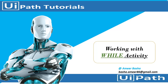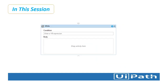Hello everyone, in this session we are going to learn about the While activity. The While activity is used for iteration purposes — unlike If and Switch which are not iterative, the While activity enables you to execute a specific process repeatedly while a specific condition is met or satisfied. The While activity continues iteration; if the specified condition is no longer met, the project exits the loop. This is how it looks in UiPath.